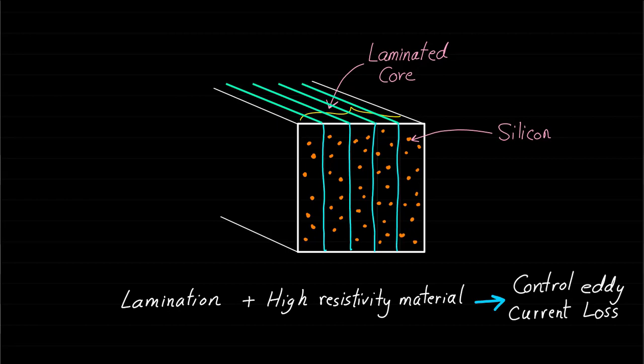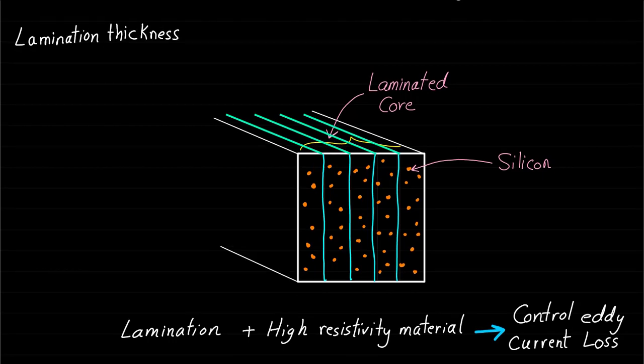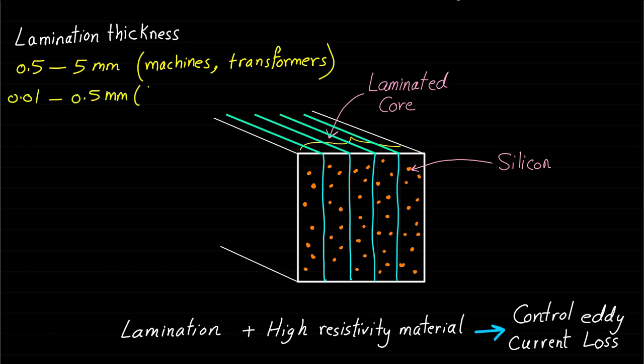It must be mentioned here that the humming noise that we hear near an energized transformer is due to the vibrations of these laminations against each other due to the changing magnetic field. The lamination thickness is usually between 0.5 to 5 mm for machines and transformers at the line frequency and between 0.01 to 0.5 mm for high frequency devices.